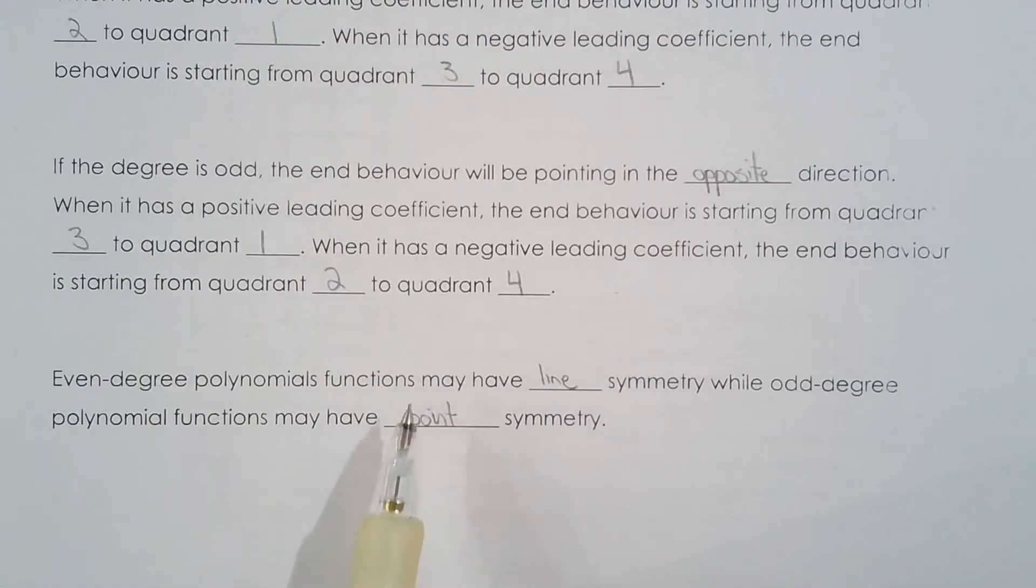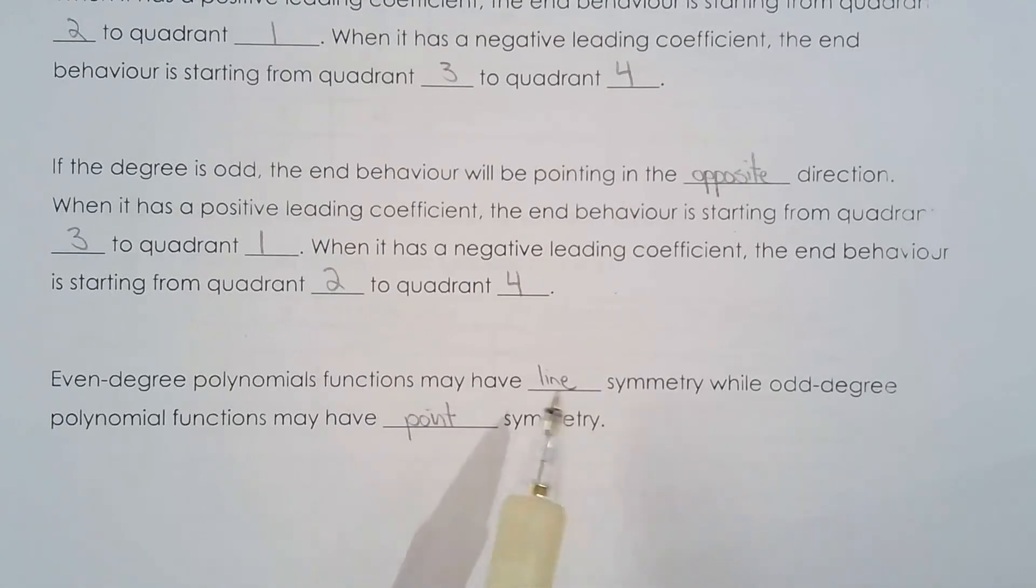Even degree polynomial functions may have line symmetry. I'm not saying it will have line symmetry but it might. While odd degree polynomial functions may have point symmetry. I'm not saying it will, I'm just saying it might have point symmetry. But what I can say for sure is that an odd degree polynomial function will not have line symmetry.